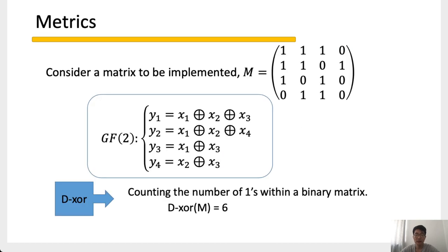Before introducing our heuristic, we should make clear the metrics we can use to estimate the cost of linear layers. Since linear layers can always be represented by binary matrices and implemented by XOR operations, it is straightforward to use the XOR count to estimate the cost. Generally, we have three kinds of XOR. The first is the direct XOR: the direct XOR count of a matrix is the Hamming weight of the matrix minus its row number. For this 4×4 example matrix, the Hamming weight is 10 minus row number 4, giving a direct XOR count of 6.